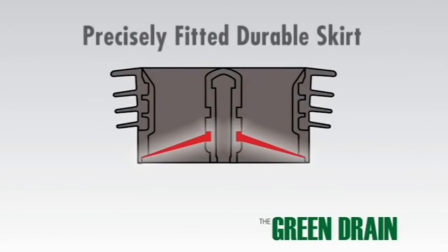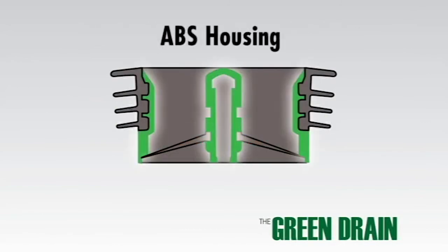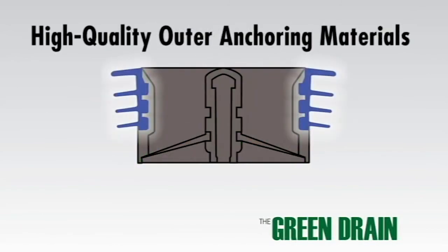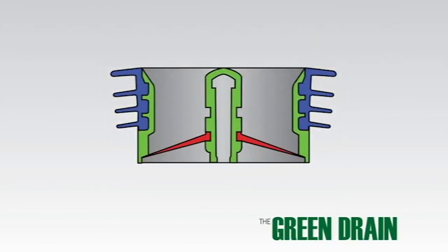The green drain is built with a precisely fitted durable skirt, ABS housing, and high quality outer anchoring materials, all fitted together to provide the best possible guard for your drain.